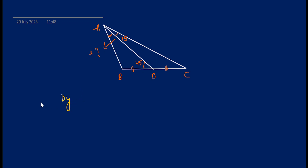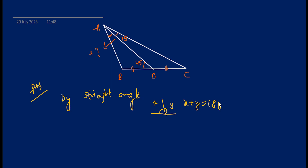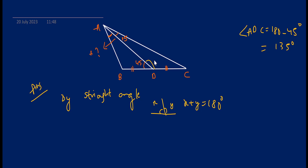We are solving the problem using the straight angle theorem: the sum of angles on a straight line equals 180°. By the straight angle theorem, angle ADC will be 180° minus 45°, which gives us 135°. So this angle ADC is 135°.